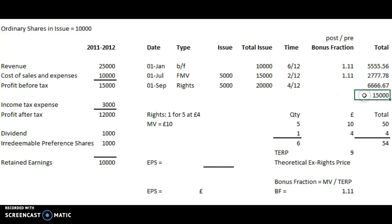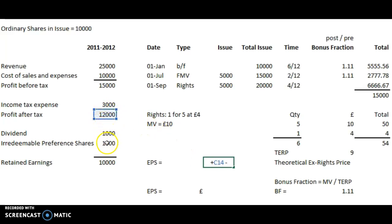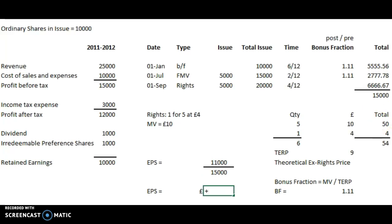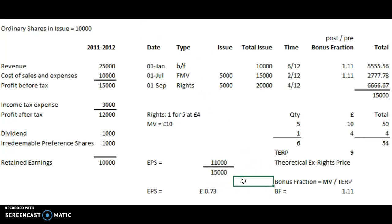These sum up to 15,000, so after all these calculations the weighted average is 15,000. We put that into our EPS figure: profit after tax minus the irredeemable preference shares gives 11,000, divided by the weighted average shares in issue of 15,000, giving 11 over 15 — which is 73 pence. That's our EPS for the period.